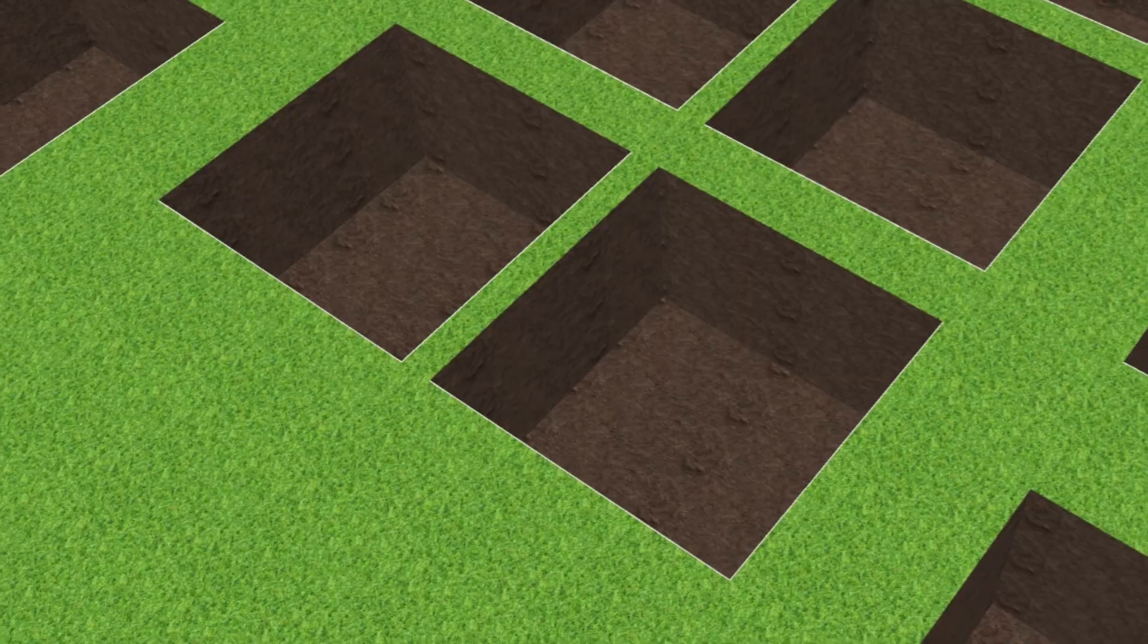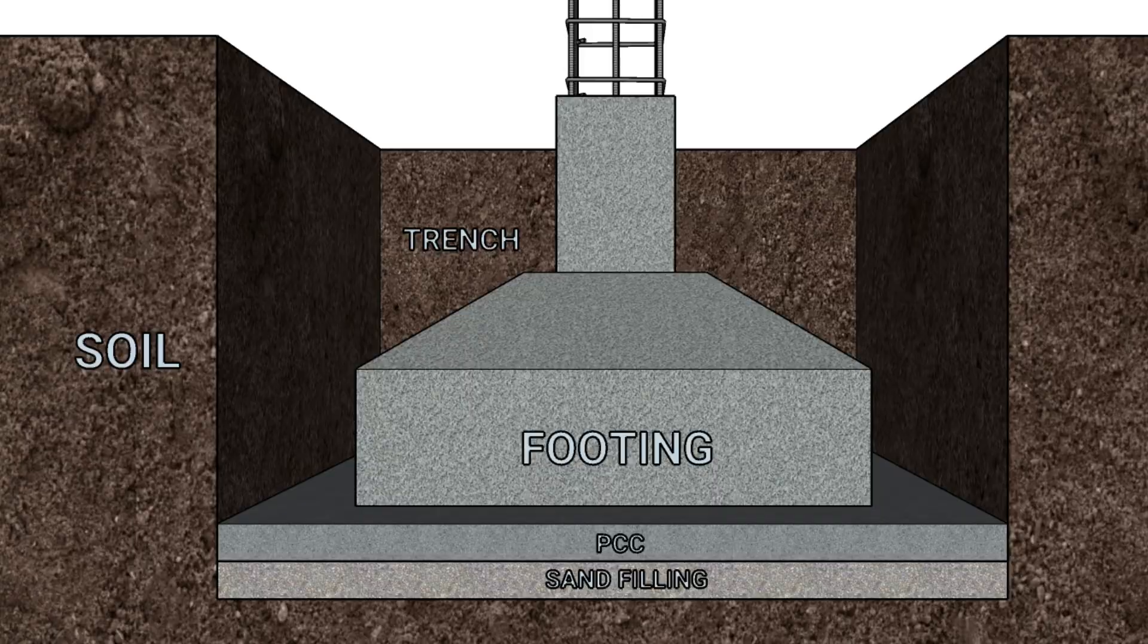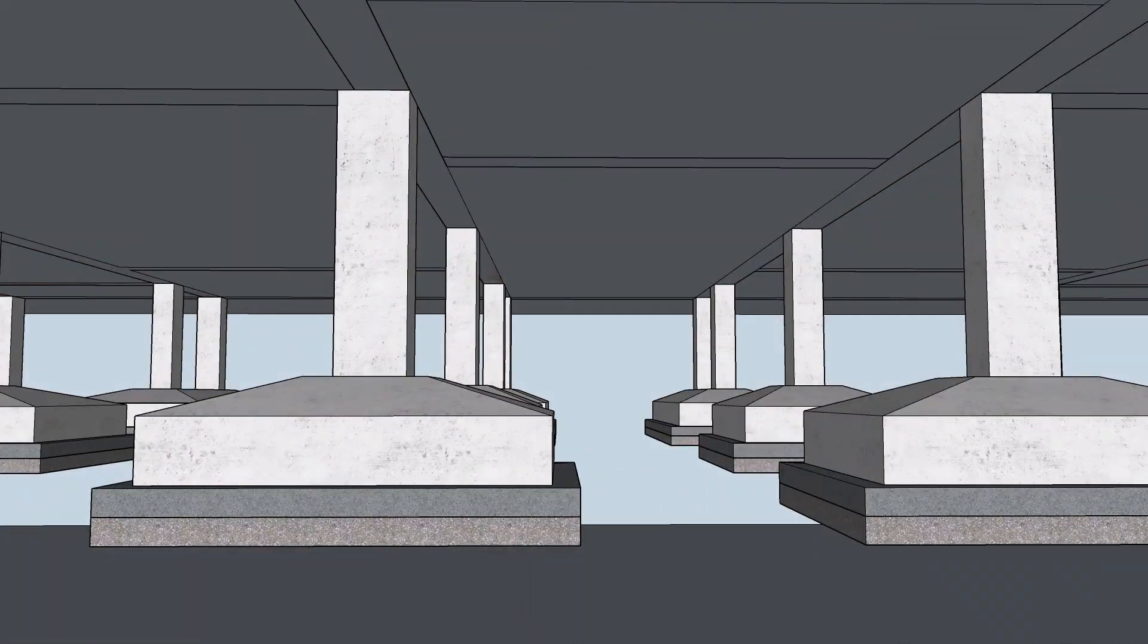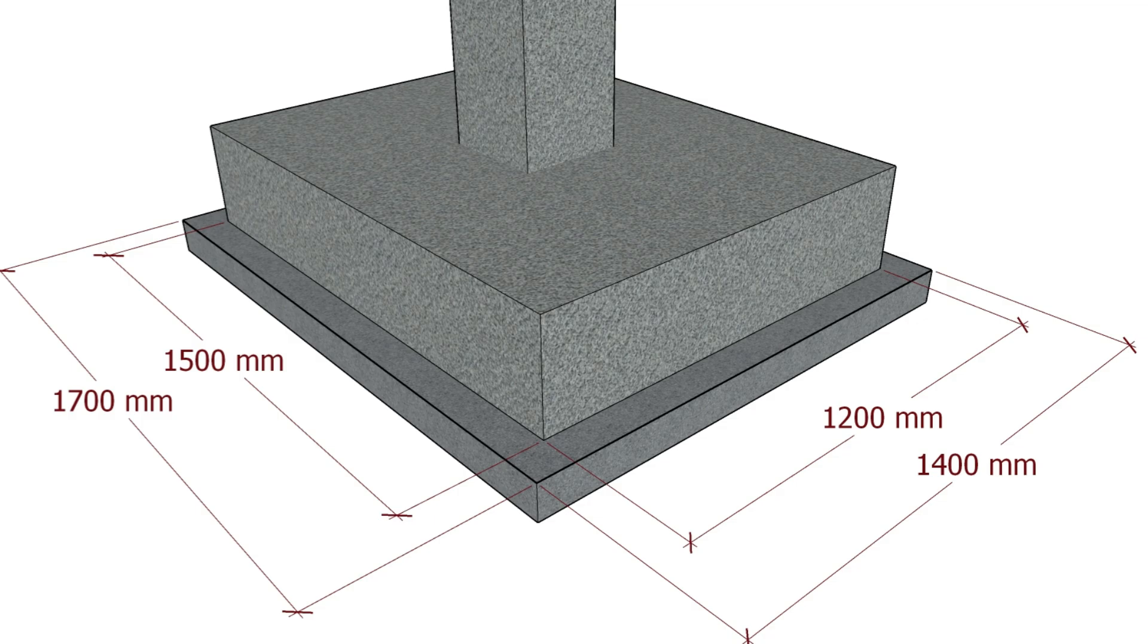When designing an ordinary structure on reasonably firm soil, it's adequate to provide an individual footing for each column. This type of foundation is known as an isolated footing. Isolated footings are usually square or rectangular in shape.